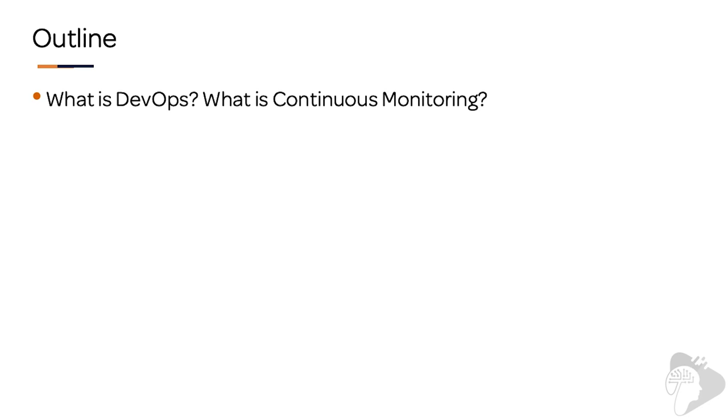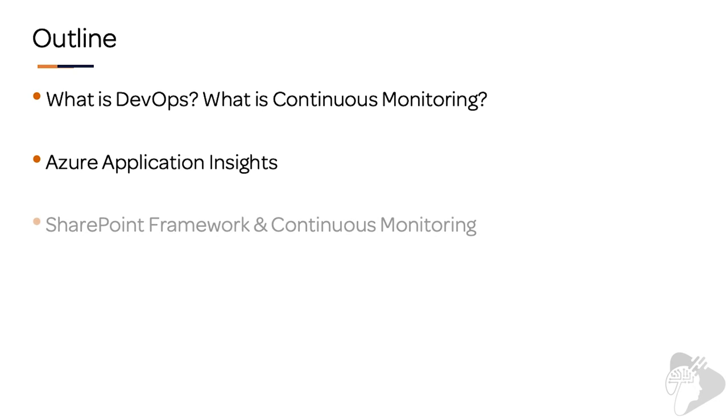We're going to start with a definition of what DevOps is, and then we're going to dive into continuous monitoring and what that involves. Then we're going to look at how we can use Azure Application Insights to implement continuous monitoring and what features it provides. After that, we'll look at the SharePoint Framework and what options and opportunities we have to implement continuous monitoring practices using Azure Application Insights in SharePoint Framework projects.